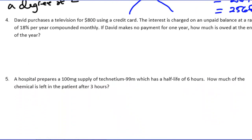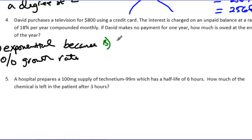Number 4, we have 2 problems left. David purchases a television for $800 using a credit card. The interest is charged on his unpaid balance at a rate of 18% per year compounded monthly. If David makes no payments for 1 year, how much is owed at the end of the year? Very common situation people get themselves in - they think I can just buy anything on a credit card and then they skip a few payments and then they find out what exponential growth is all about. So this is exponential growth because again we have a percent which is a percent growth rate. Each time we do this it's going to grow more and more as we go on.